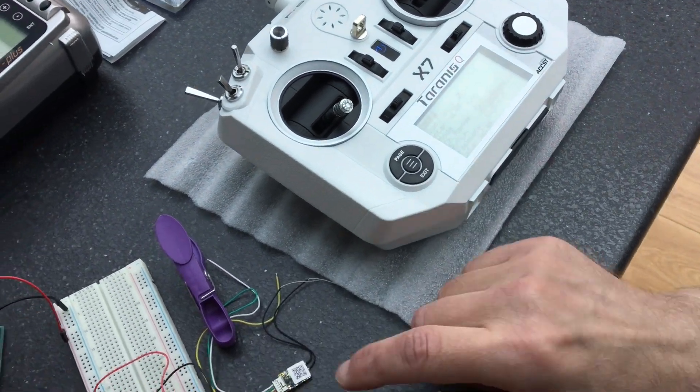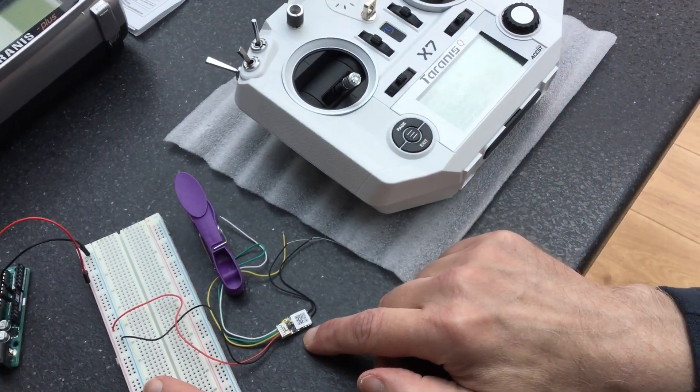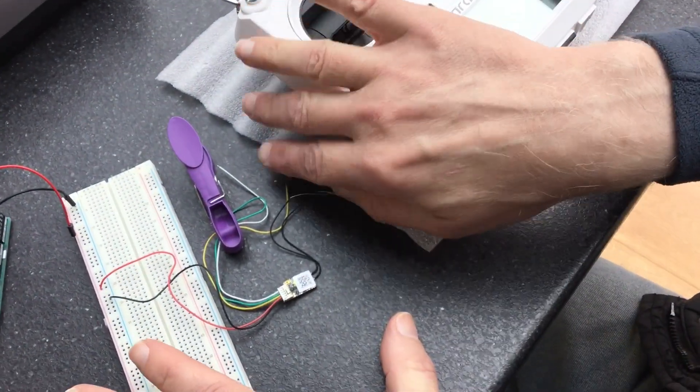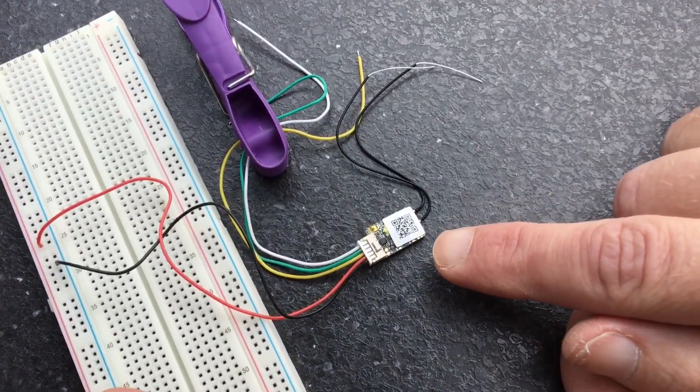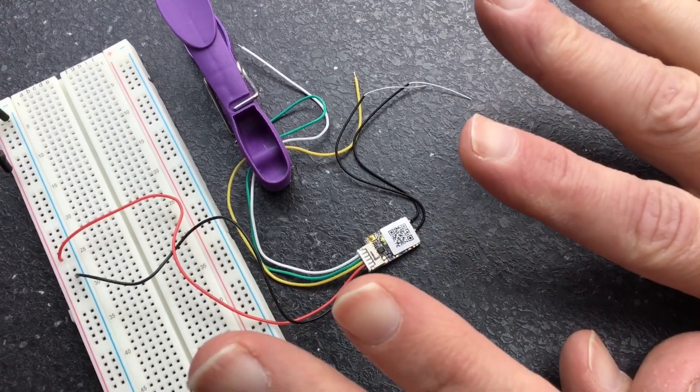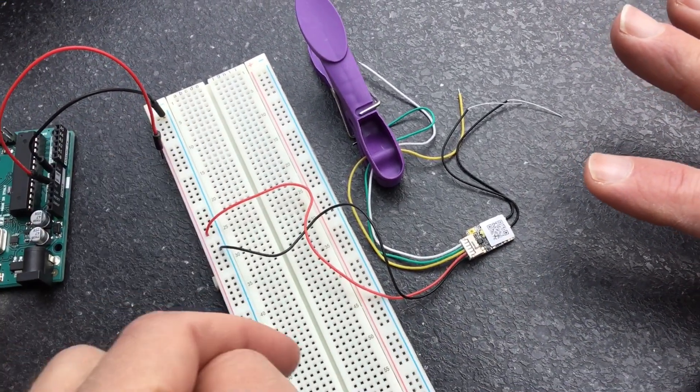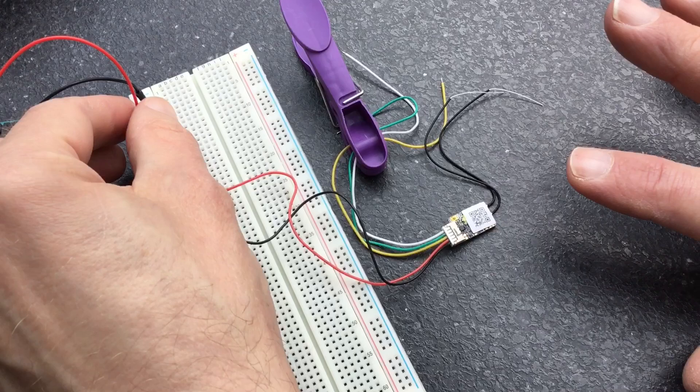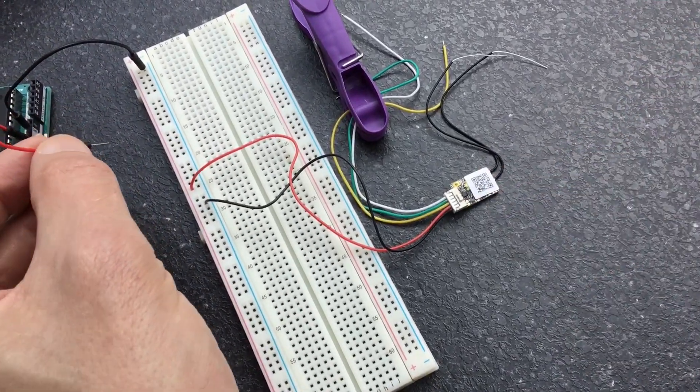So here now, looking at the receiver, which is an RXSR. We've got an RXSR that is not powered up and it's connected to this breadboard, Arduino, but the power is not connected so it's not illuminated.